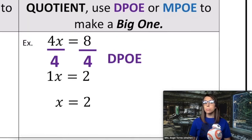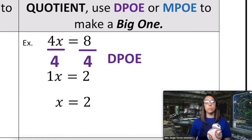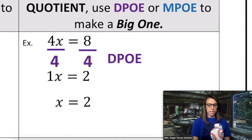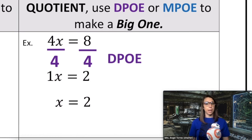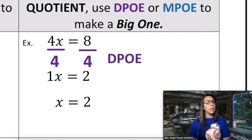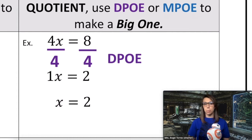In this equation, there's multiplication happening. 4x is a product — 4 times x. To undo multiplication, we use division. Dividing by 4 creates a big 1 because 4 divided by 4 is 1, and 1x is x by itself. We end up with x equals 2 after dividing by 4 on both sides. So when you see multiplication, regardless of if it's positive or negative, we think DPO.